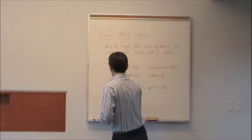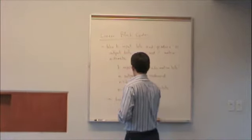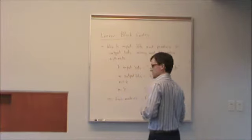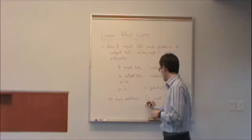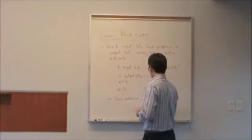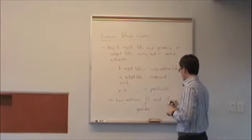Basically, what we do is we have two matrices, G and H. G is called the generator, the generator matrix. H is called the parity check matrix.